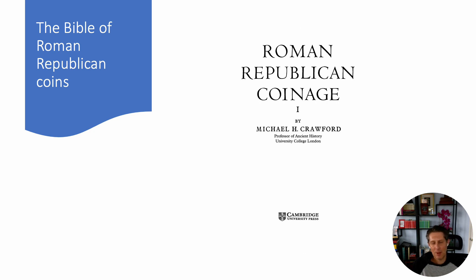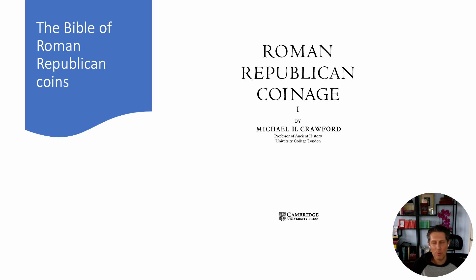Crawford catalogs these coins and organizes them chronologically. But Crawford is also an excellent scholar, so when he catalogs these things he also talks about why the coins have the appearance that they do and what the iconography means. Why did this particular coin look the way it did? Why does it have these particular images? Why does it have these particular legends? The legend is just the words that are written on the side of the coin.